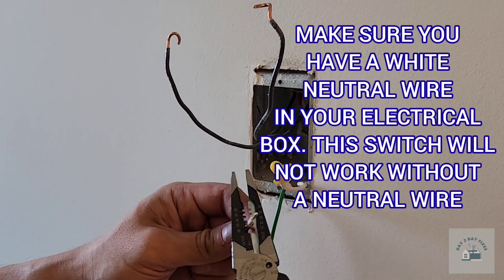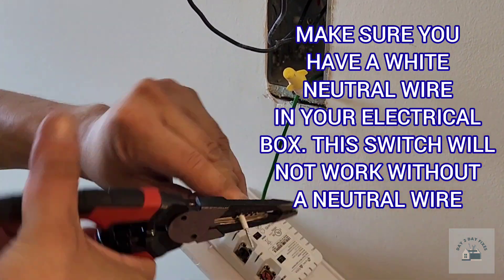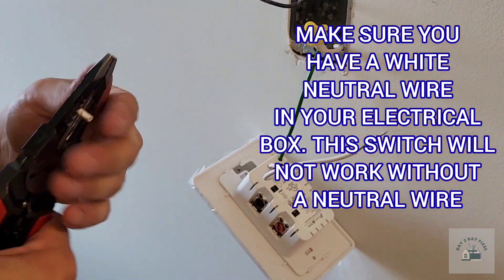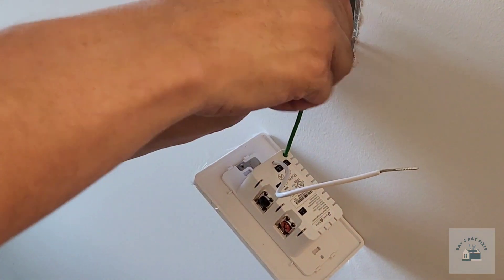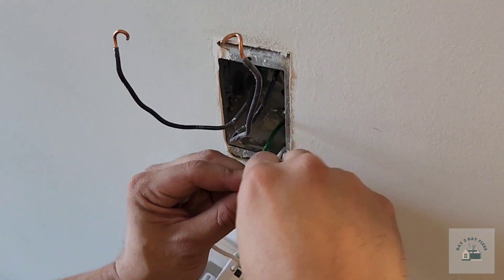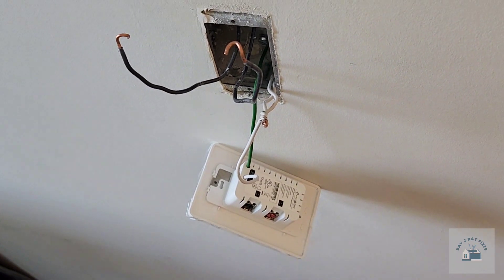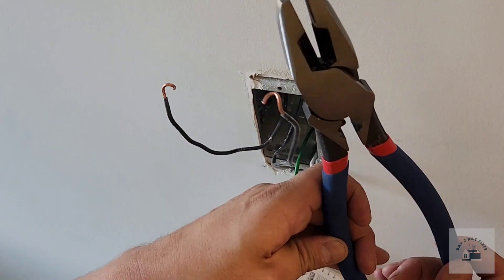We can continue with the installation by going back to the breaker and turning the breaker back off. Now I am stripping the neutral wire so that way I can tie it together with the neutrals that are there.